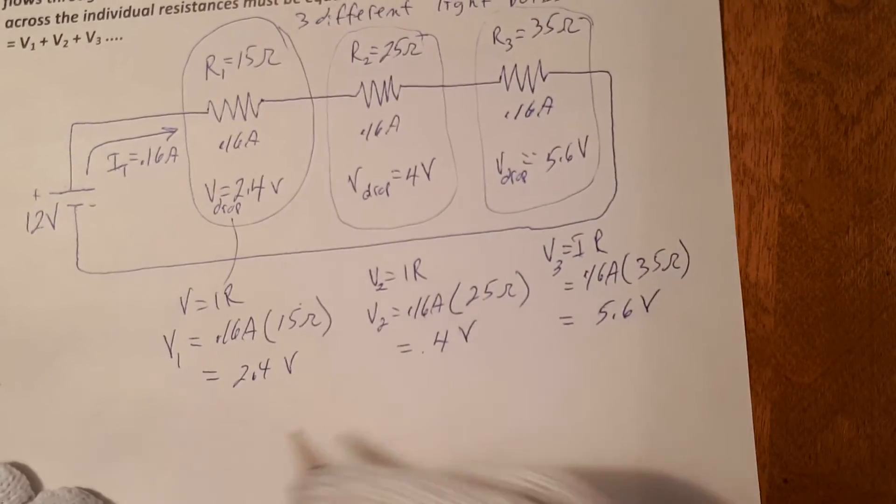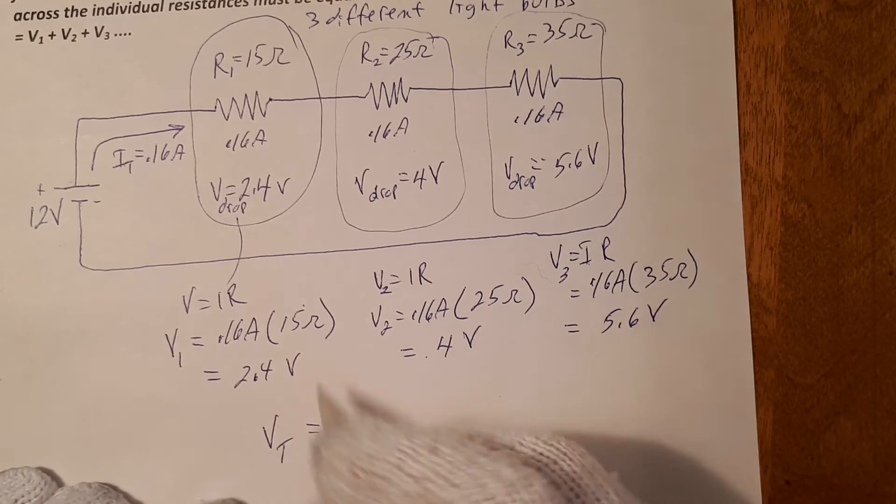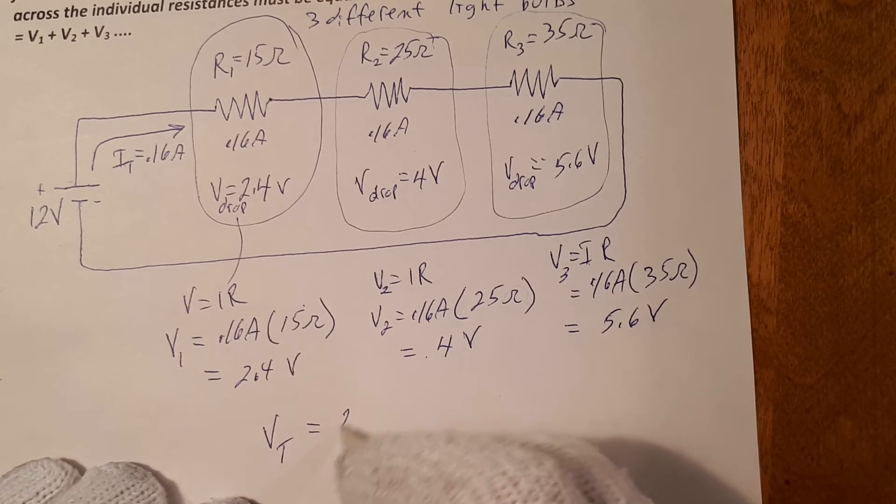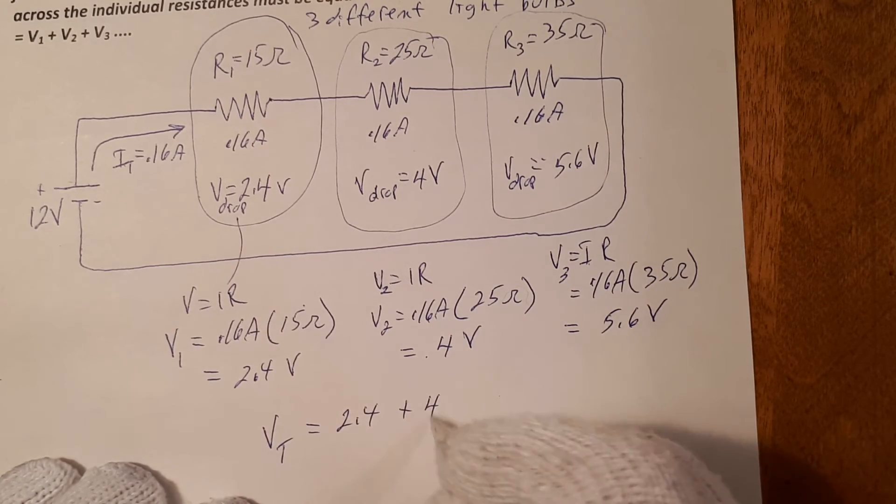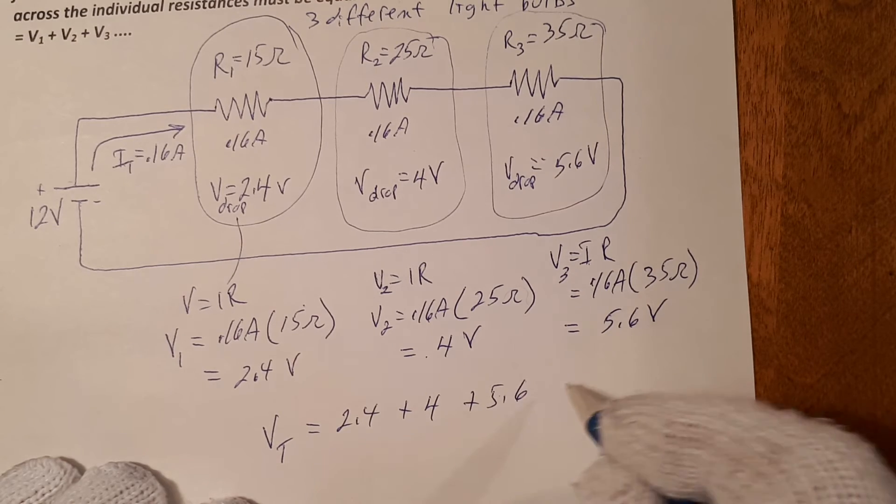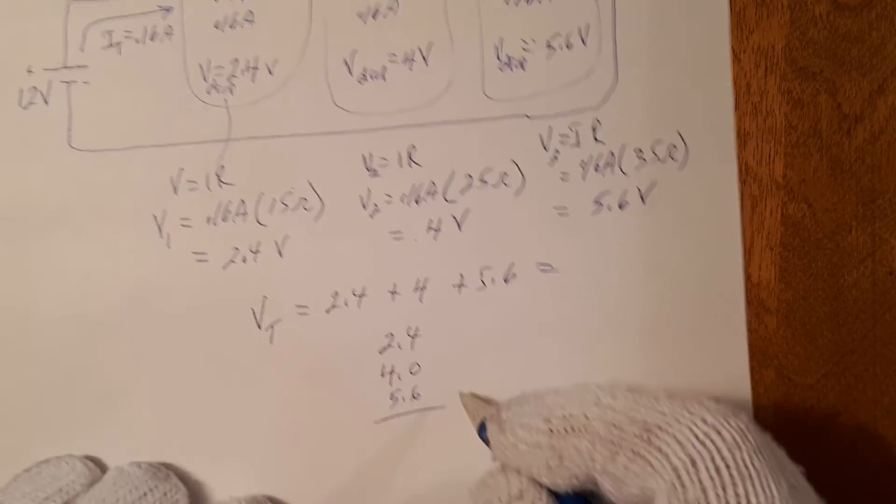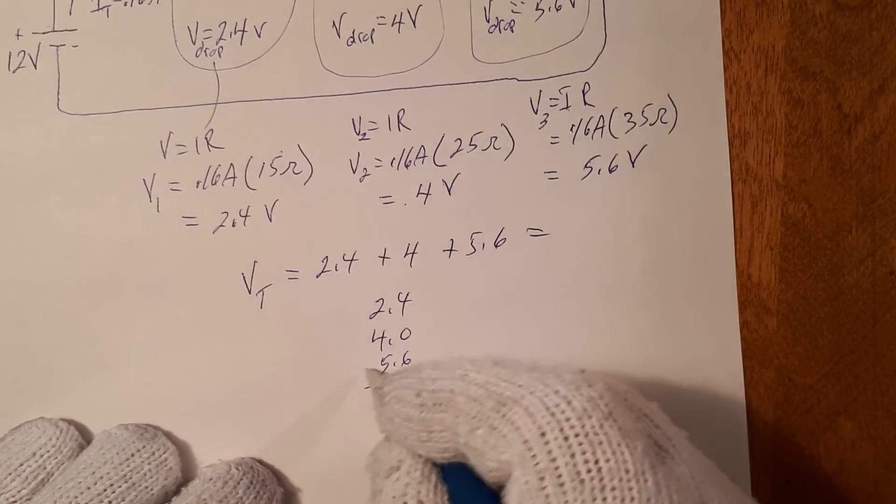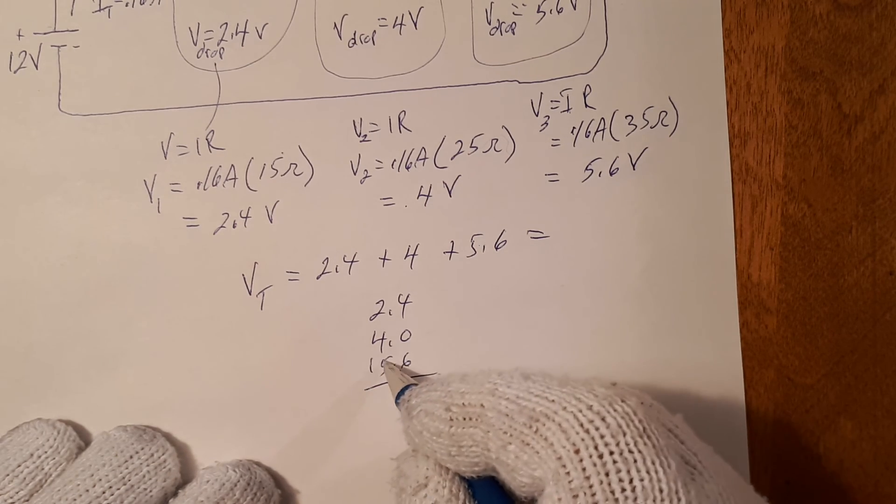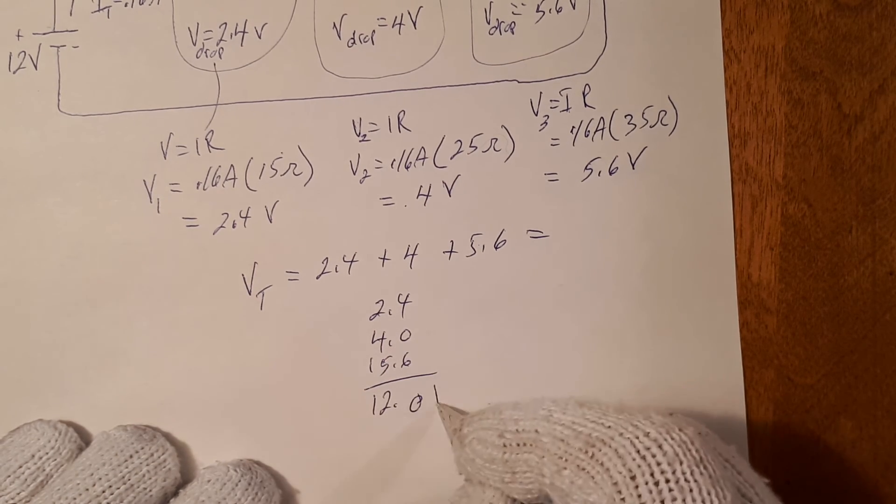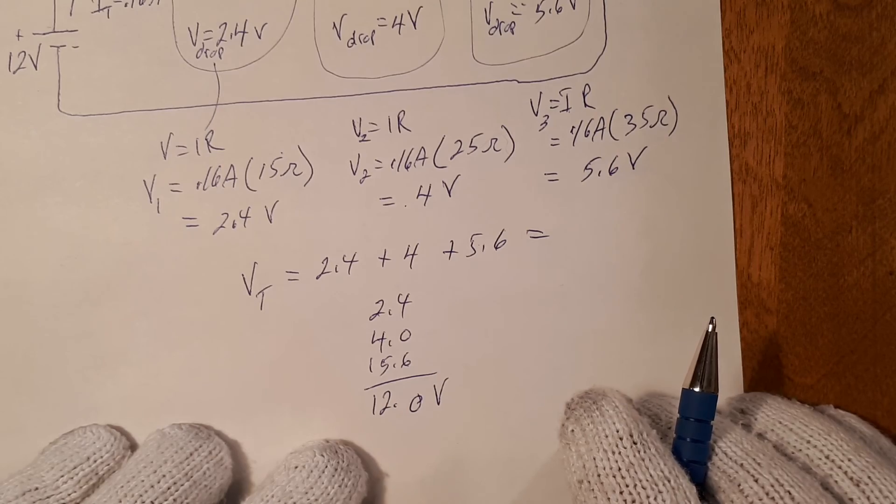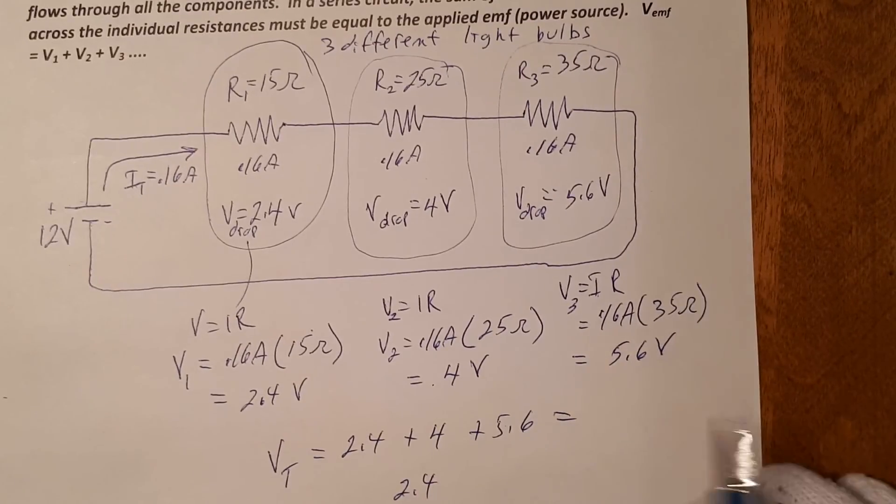So adding all of these up, voltage total through all these voltage drops is equal to 2.4 plus 4 plus 5.6. Adding this up, 2.4, 4.0, 5.6. 10, carry 1, 6, 10, 12. There we go, 12 volts. And this is the definition of a series circuit.